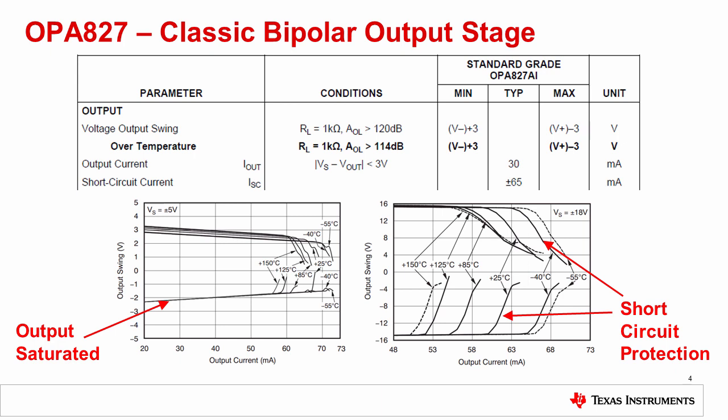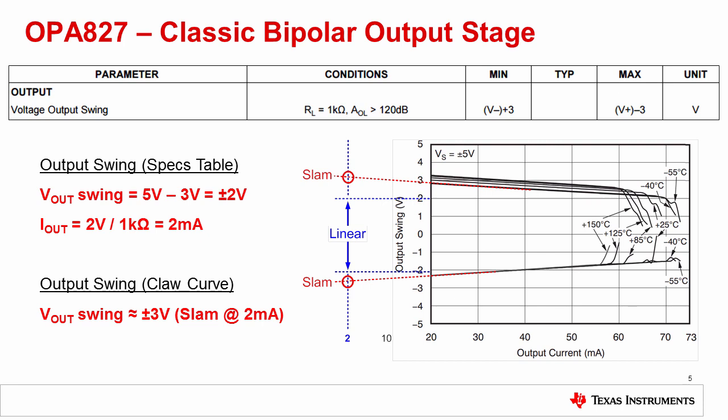The short circuit protection is intended to prevent damage to the amplifier when a short or low impedance load is connected to the output. You should not expect to drive a linear output signal at this current level. Remember, stay inside the curve and give yourself enough margin to assure a linear output swing. To reiterate what we discussed in the last slide, the output swing in this table is linear because AOL is defined in the test conditions. The claw curve, on the other hand, is always a SLAM limit. For a plus or minus 5 volt supply, the table indicates a linear output range of plus or minus 2 volts. The table test condition also defines a 1K ohm load, which would correspond to a 2 milliamp current for the 2 volt output swing. The claw curve does not show the output swing at 2 milliamps, but you can extrapolate backwards and see that the claw curve limits are around 3 volts, whereas the linear range is 2 volts.